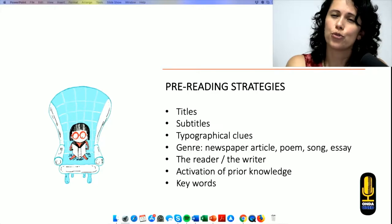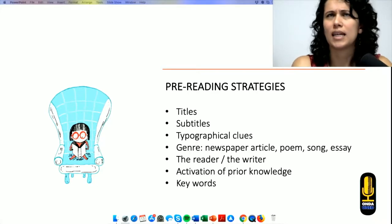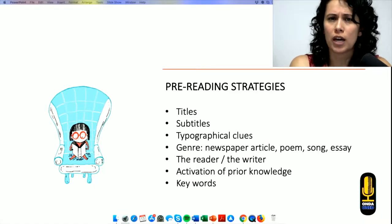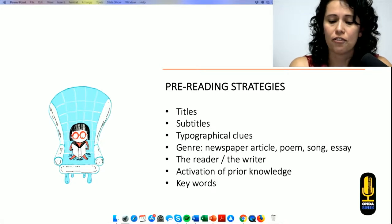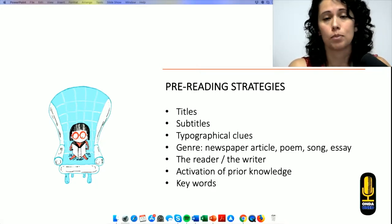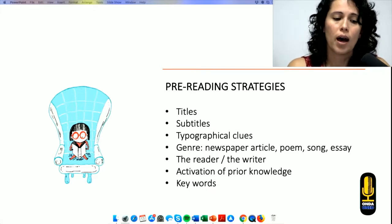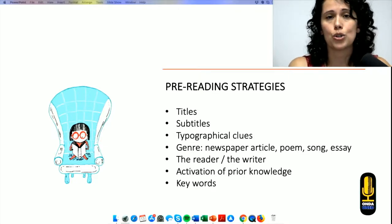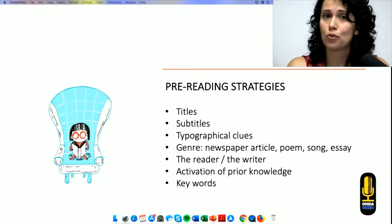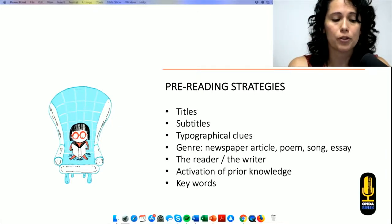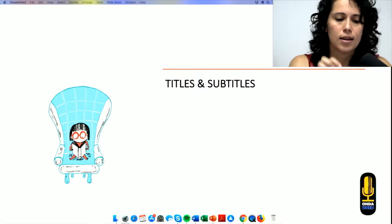Now, let's talk about some of the pre-reading strategies that we could use. Whenever you are going to read a text, one of my recommendations at first is to read titles, subtitles, typographical clues. Know which genre you're going to be exposed to. If you have access to who wrote the text will be great. And also, activate your background knowledge. Try to recall whatever you know about the topic. And keywords.